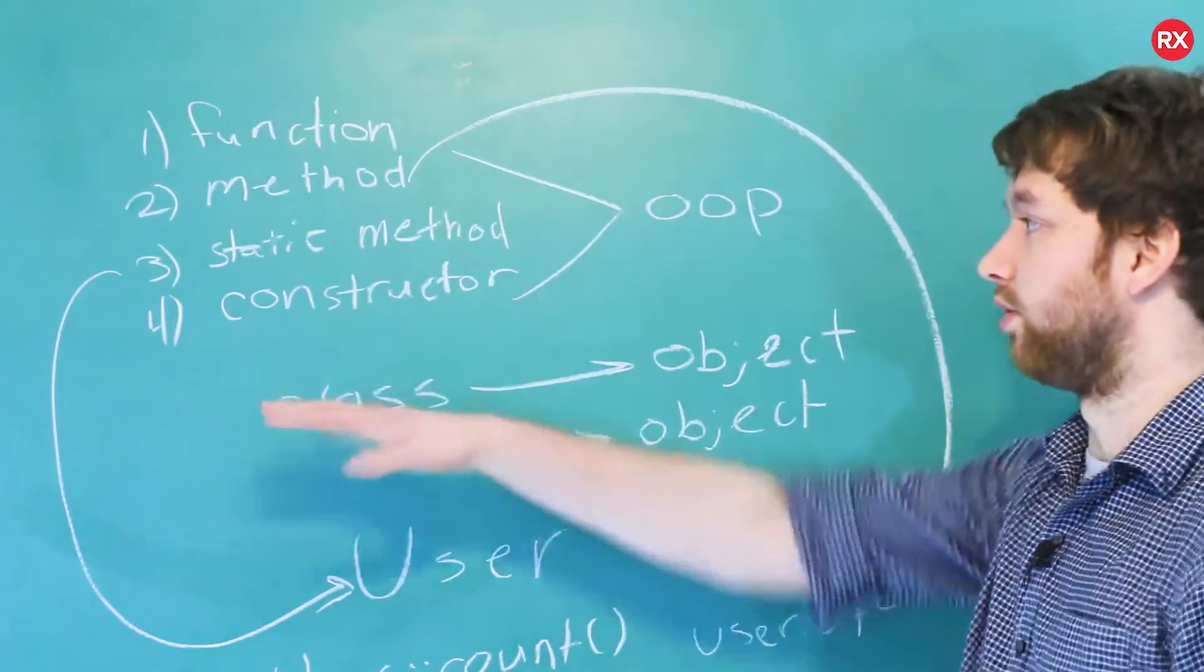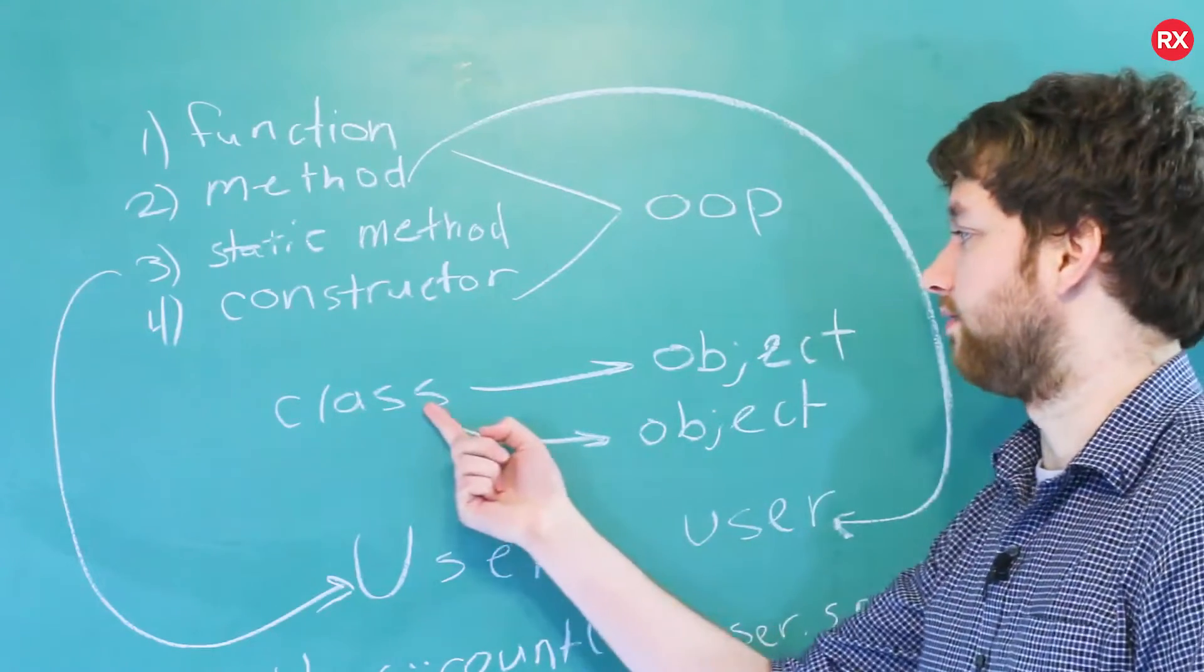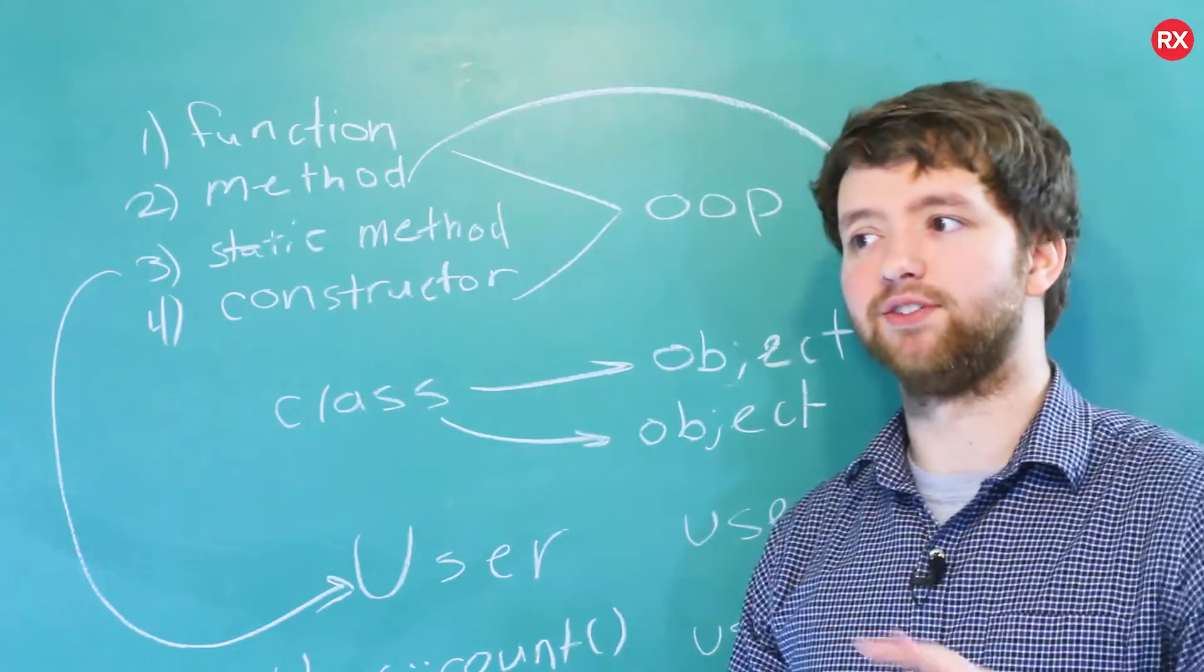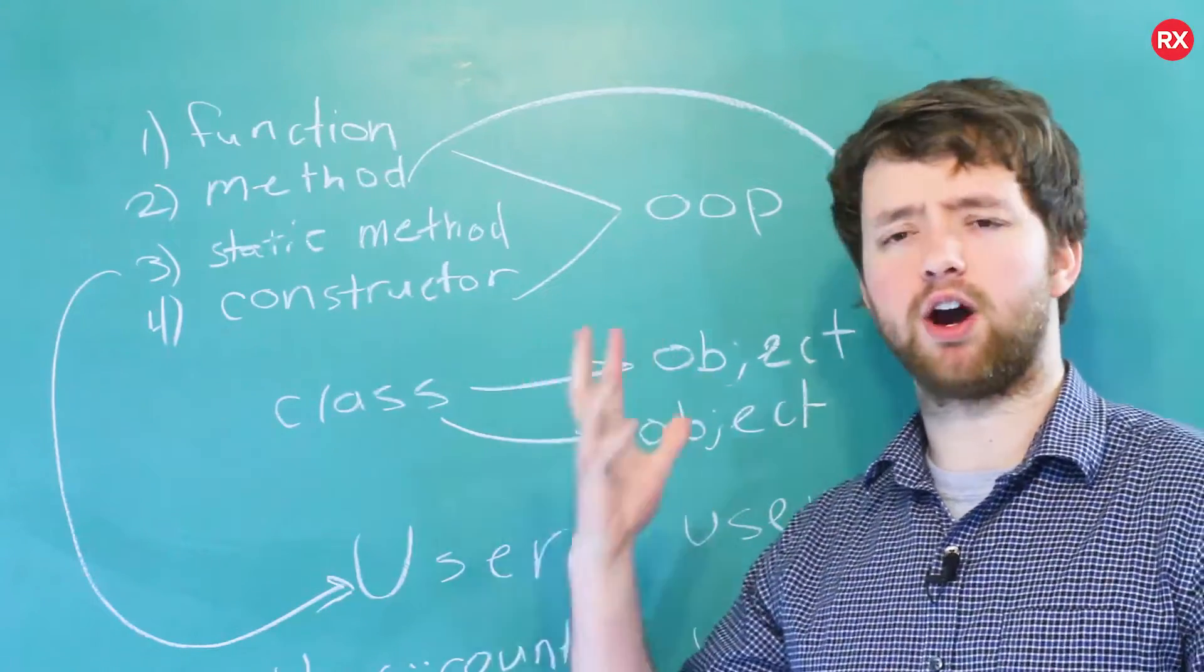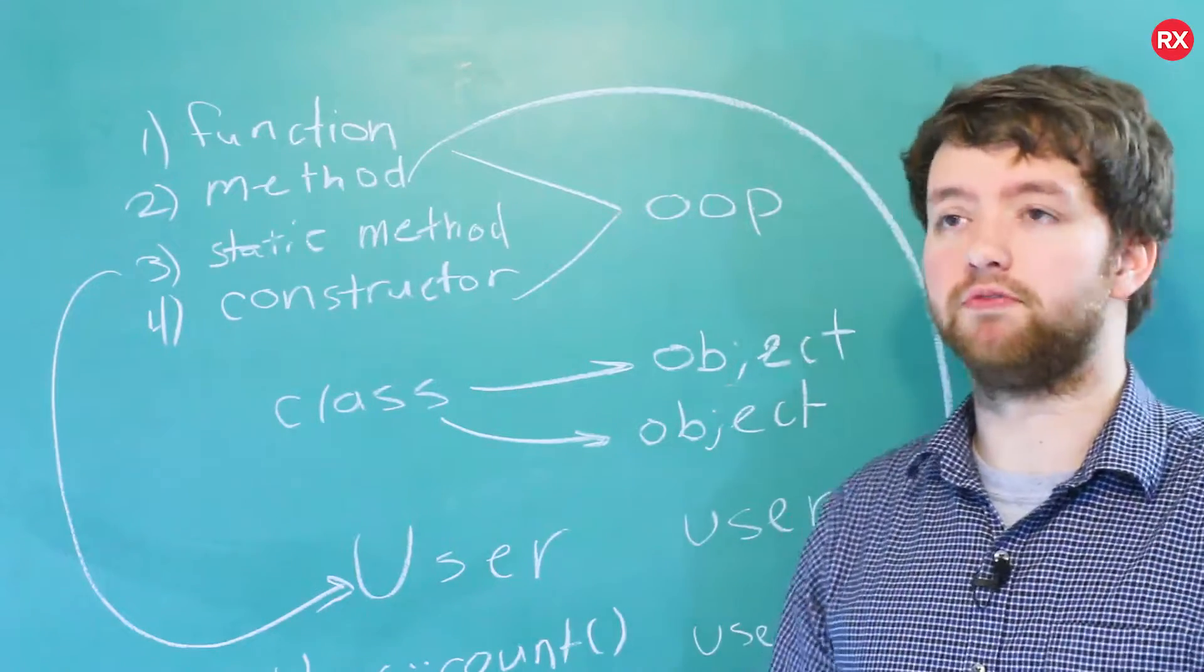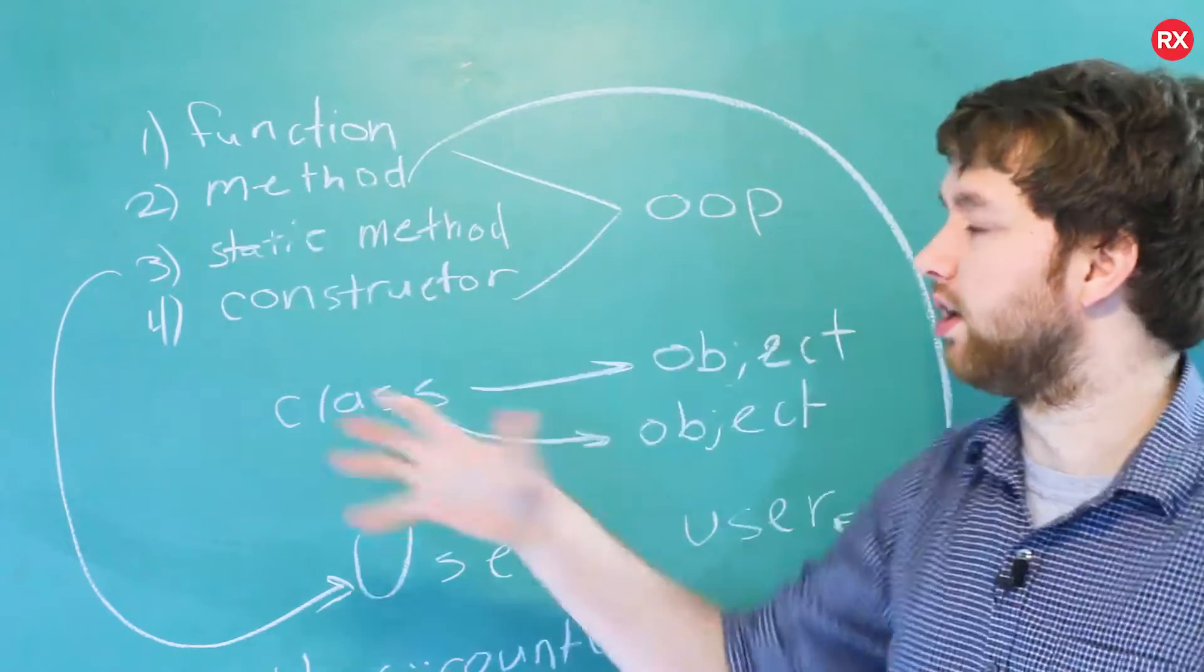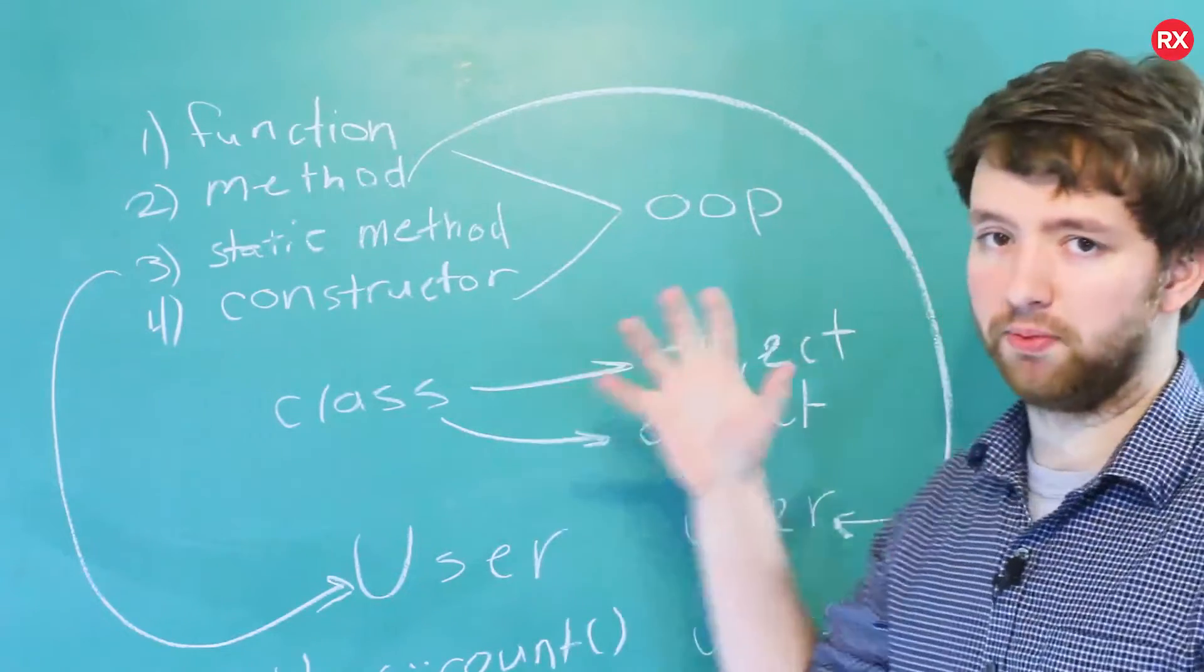And the last one is a constructor, which is a special function that is called in the process of instantiating a class. Now we haven't talked about object-oriented programming again, just mentioning that. So if this is like very cloudy and not clear, that's fine. Just follow along the best you can. The most important thing that you get from this video is the difference between a function and a method. These two will come later, but this is related because they are functions. So I thought I'd throw them in this video.